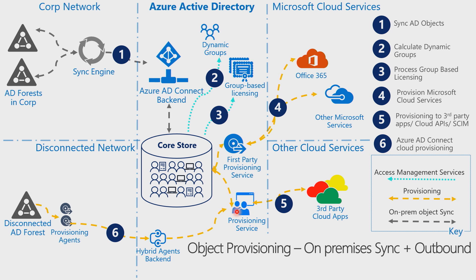Now let's move on to the next scenario, which covers creating an object in the cloud HR system. So far we have outbound provisioning, which means from the directory to the applications. When an organization creates an identity in the cloud HR system, the flow is reversed, and that's what is called inbound provisioning.